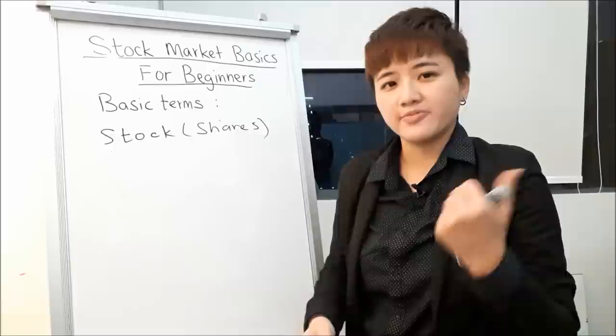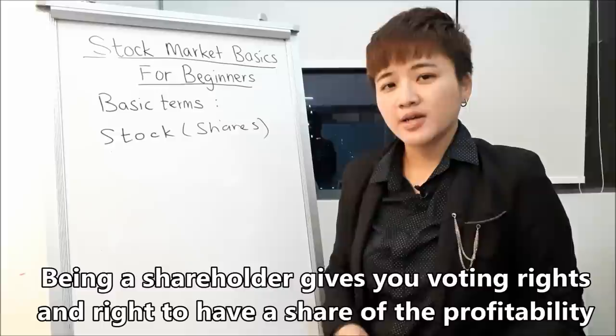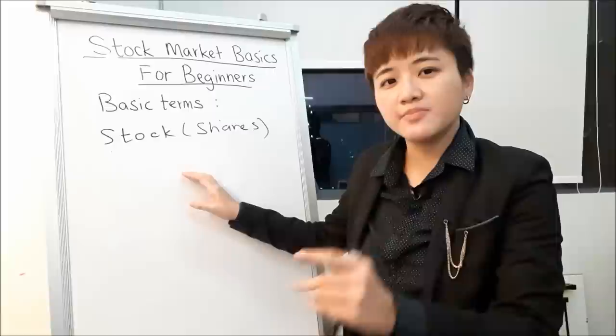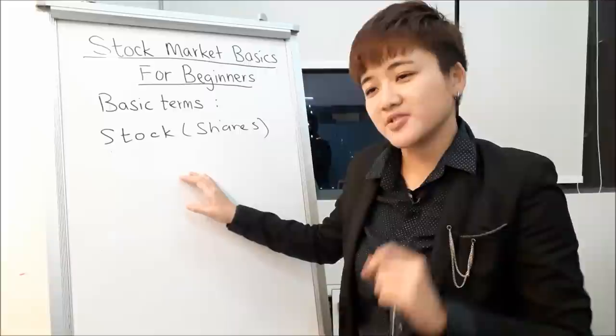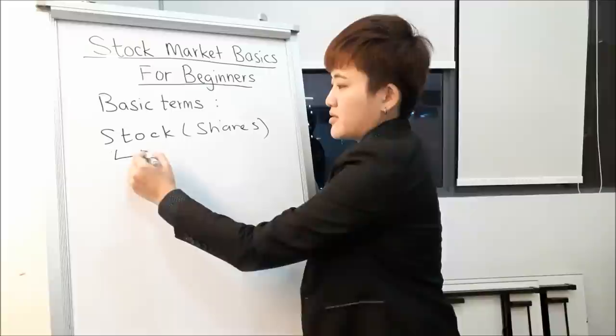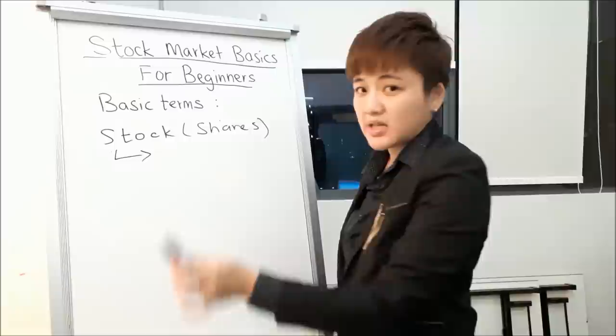When you buy a share of the company, it gives you a couple of rights. The first is voting rights — you can participate in their AGM and vote on the management team running the company. If you bought 100 shares and your friend bought 1,000 shares, your friend would have more power than you. The more shares you buy, the more power you have as a shareholder.